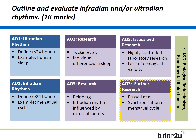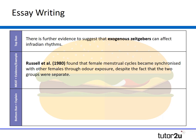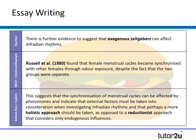Finally, let's look at further research that supports the previous point — Russell and the synchronization of menstrual cycles. You might say: there is further evidence to suggest that exogenous zeitgebers can affect infradian rhythms. Russell found that female menstrual cycles become synchronized with other females through odour exposure, despite the two groups being separate. This suggests that synchronization of the menstrual cycle can be affected by pheromones and indicates that external factors must be considered when investigating infradian rhythms — and that perhaps a more holistic approach should be taken as opposed to a biologically reductionist approach that only considers one endogenous influence. I've started to bring in issues and debates, acknowledging specialist terminology from that part of the course.